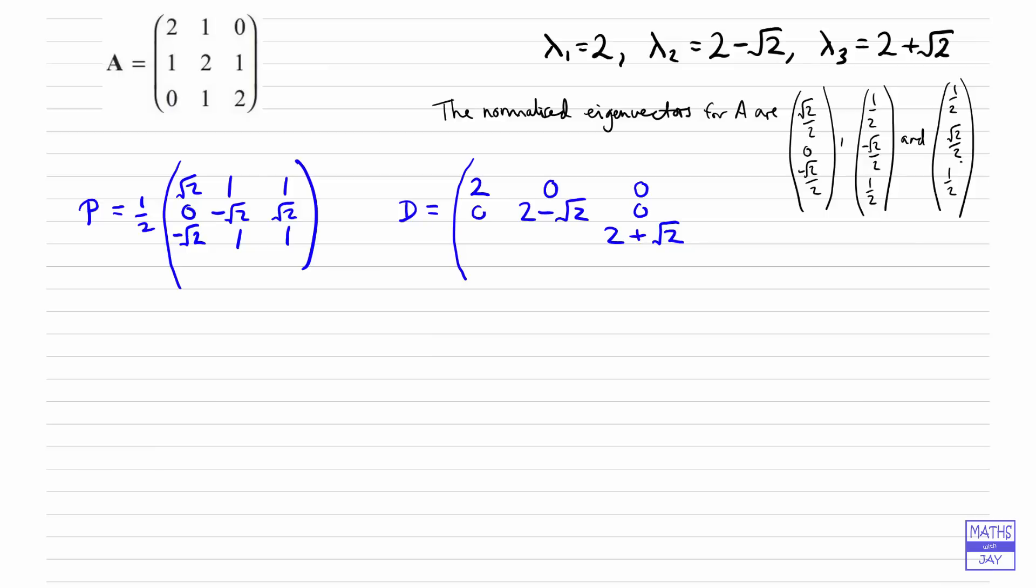So that's all you need to do to get your two marks. That's one possibility for P and D.